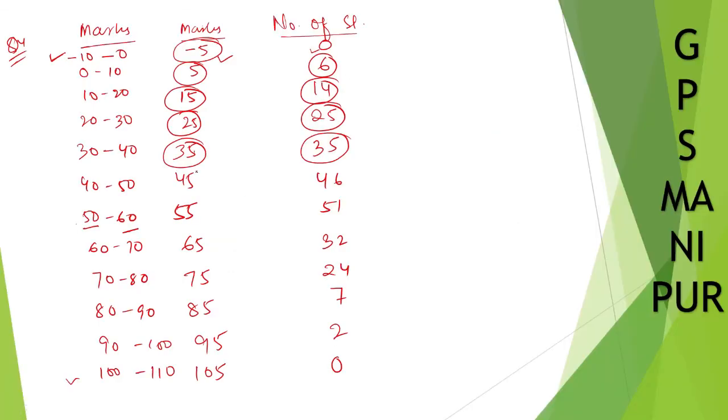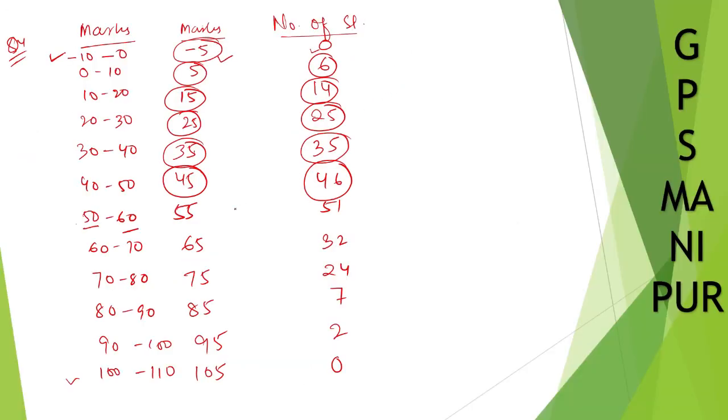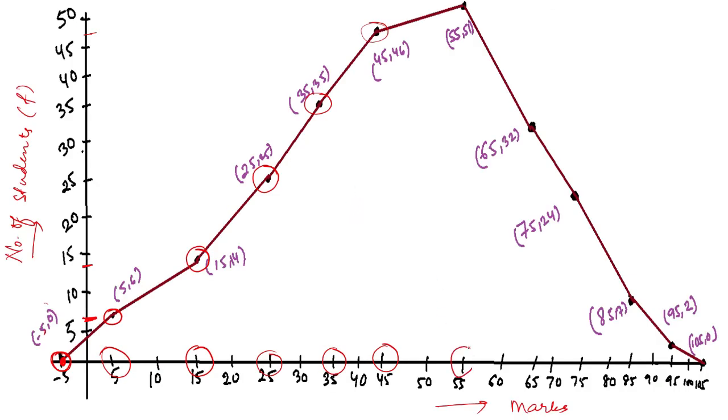Next, max is 45 and student are 46. So max is 45 and student are 46. 46 will be somewhere here. And max is 55. Student is 51. Max is 55. Student is 51. So like this.